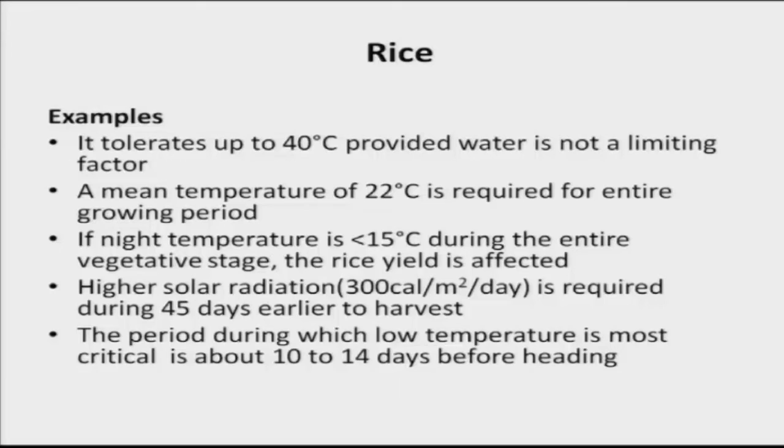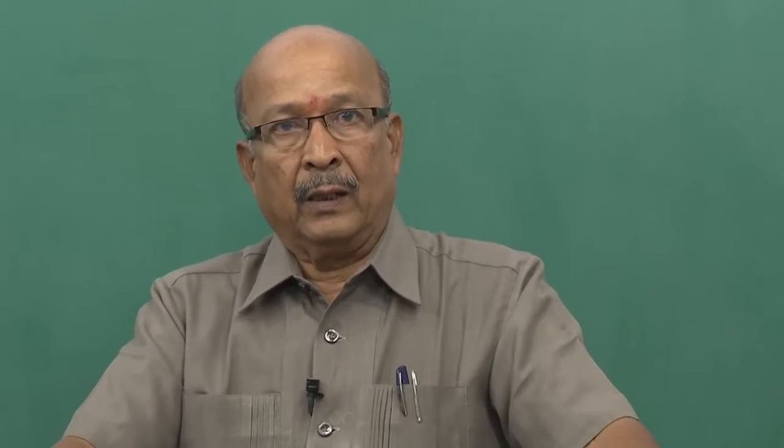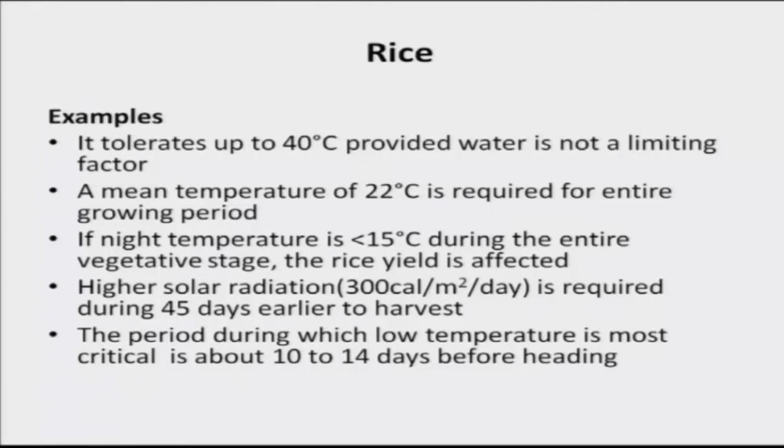The night temperature must be around 22 to 23 degrees centigrade. Higher solar radiation — more than 300 calories per meter square per day — is required during the 45 days before harvest. A cloud-free environment is required from flowering to 10 to 15 days before harvest, so that flowering, pollination, seed development, and the milking stage all proceed well with high solar radiation of 300 calories per meter square per day.